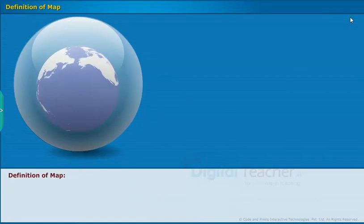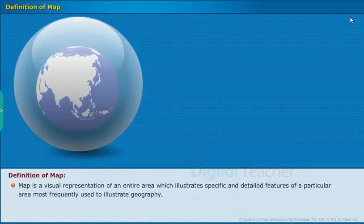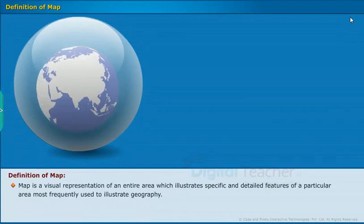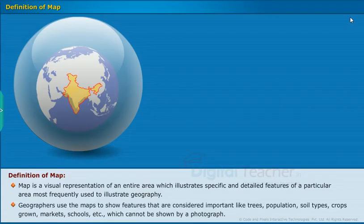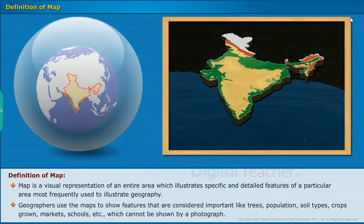Let us start our learning with the definition of map. A map is a visual representation of an entire area which illustrates specific and detailed features of a particular area, most frequently used to illustrate geography. Geographers use maps to show features that are considered important, like trees, population, soil types, crops grown, markets, schools, etc., which cannot be shown by a photograph.